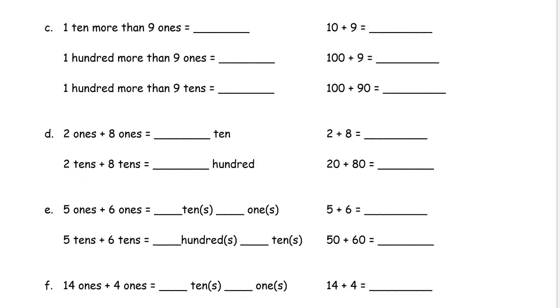One ten more than nine ones. One ten more than nine ones equals one nine one. Sometimes it's just easy. Ten plus nine is nineteen.